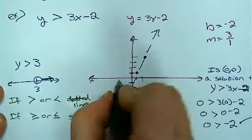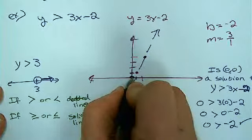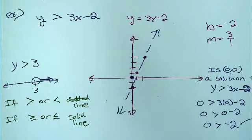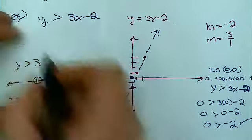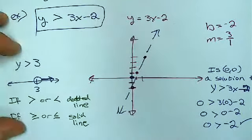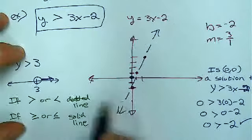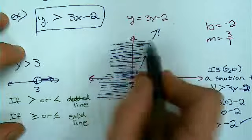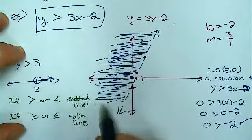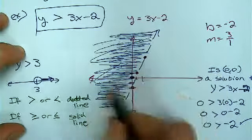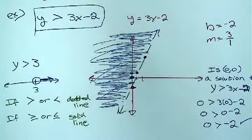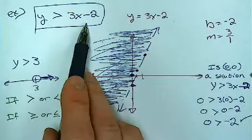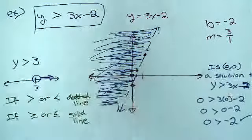So that means this point right there, 0, 0, is a solution. So when I talk about graphing all the solutions to that inequality, it's everything on this side of the dotted line. All of the points in this field over here represent solutions to that linear inequality. They all work. They all will make that true.